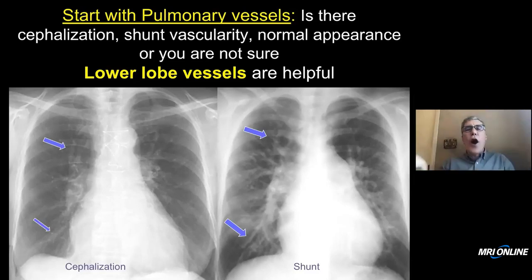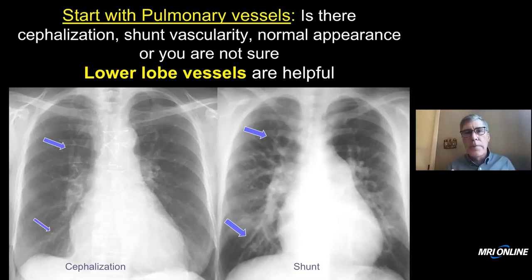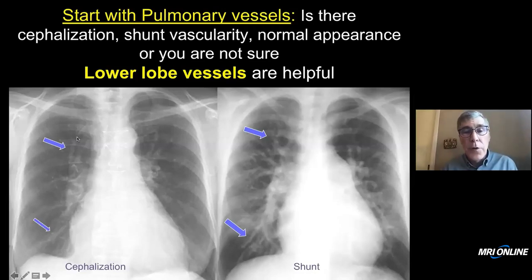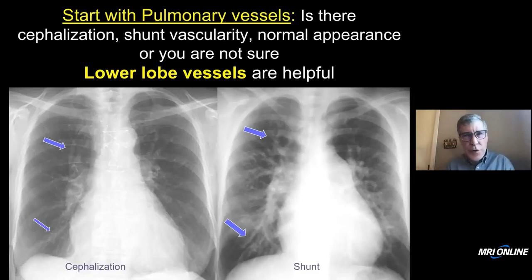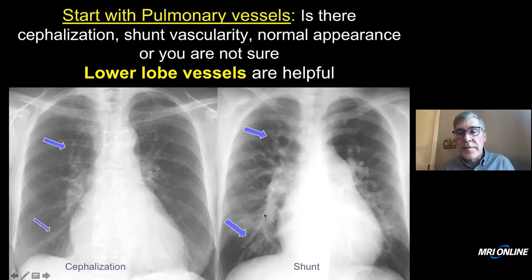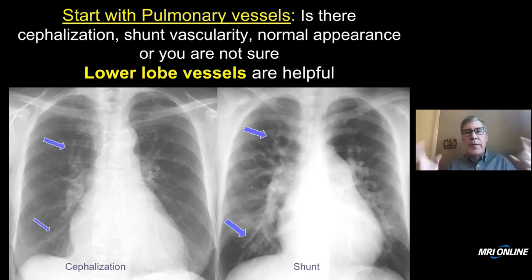Cephalization and shunt vascularity mean the exact opposite — shunt is a plethora of blood flow and cephalization is redistribution. Both have upper lobe vessels that are dilated, but the lower lobe vessels will help you distinguish. If the lower lobe vessels are constricted and small, that is cephalization — chronic compensated heart failure. If the vessels are the same size all the way through, that is shunt vascularity with an increased amount of flow. That's your starting point.